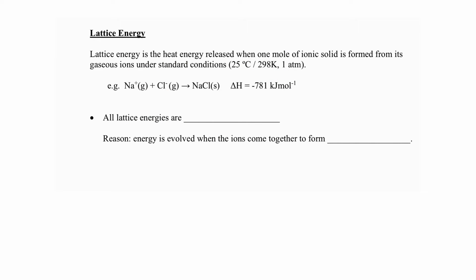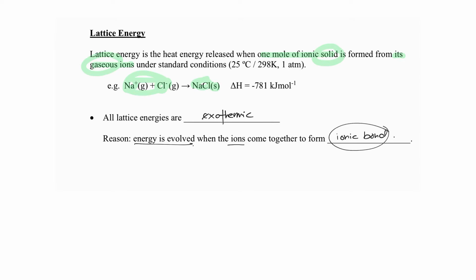The last term is lattice energy, which is the energy released when one mole of ionic solid is formed from its gaseous ions. For example, Na⁺(g) and Cl⁻(g) come together to form NaCl(s). When they come together, ionic bonds form, so lattice energy is always exothermic. The stronger the ionic bond formed, the more energy is released, meaning the higher the lattice energy, the stronger the ionic bonds.